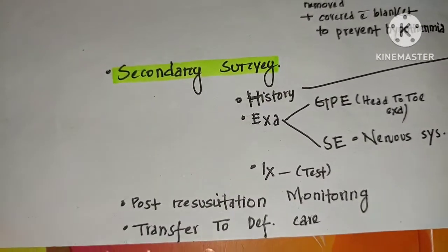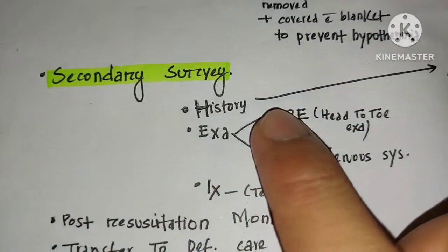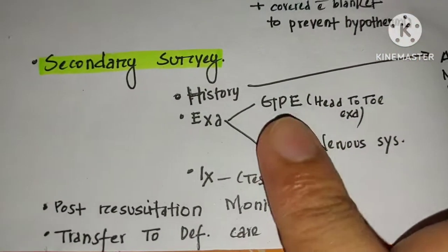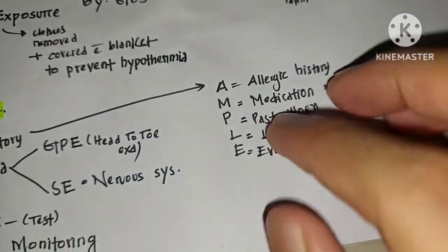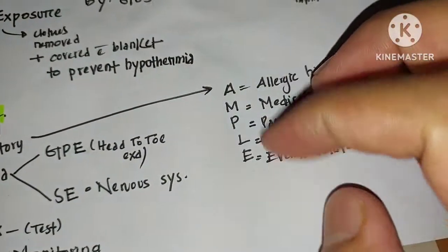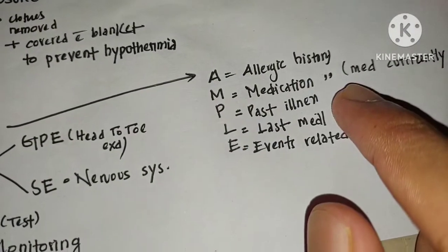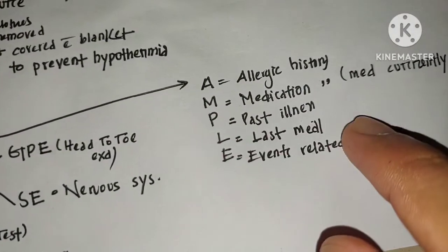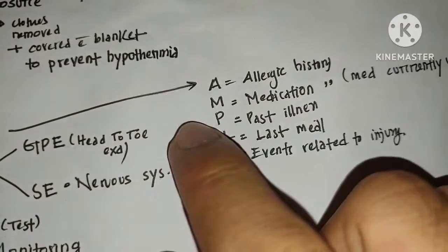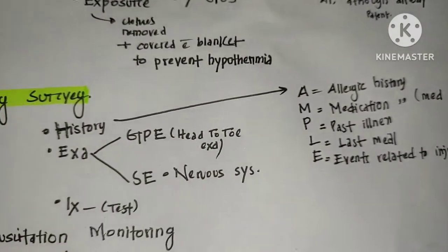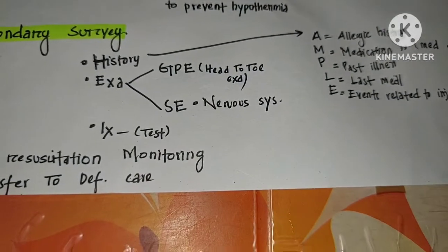Secondary survey is essentially a long-case assessment. We take the patient's history, perform examination, conduct investigations, and provide treatment. For history, we use the AMPLE framework: Allergies, Medications, Past medical history, Last meal, and Events related to injury. For female patients, we also check if the patient is pregnant.